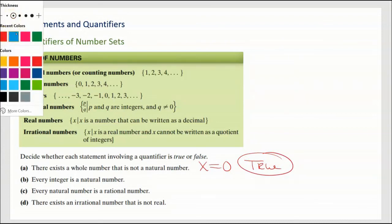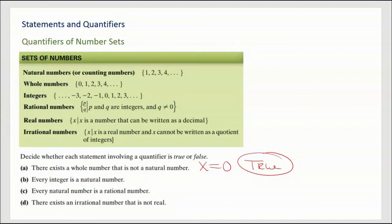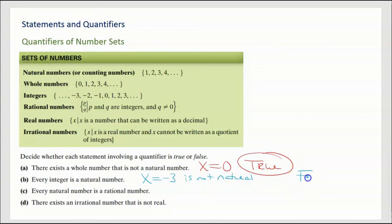Next: 'Every integer is a natural number.' Integers include ...-3, -2, -1, 0, 1, 2, 3... But the natural numbers start at 1. We can see that x = -3 is not a natural number. What we found here is called a counterexample. This is a false statement because we were able to find an integer that is not a natural number.